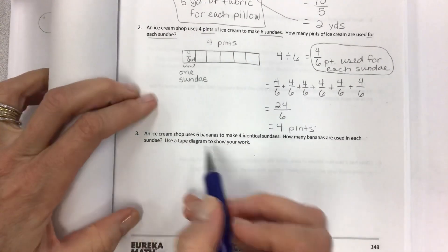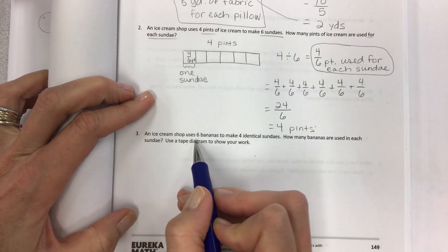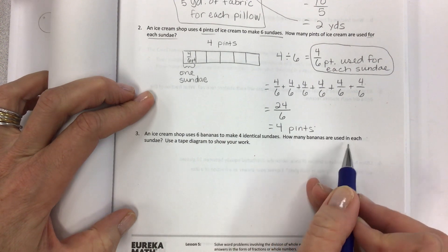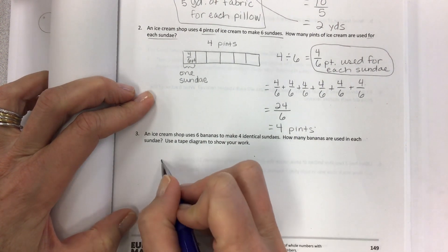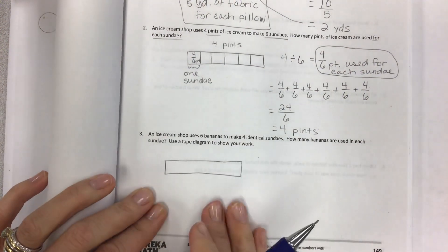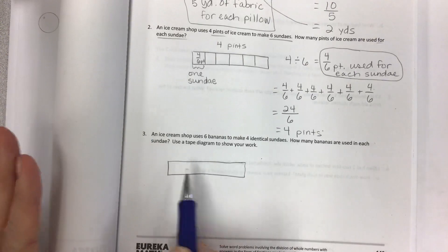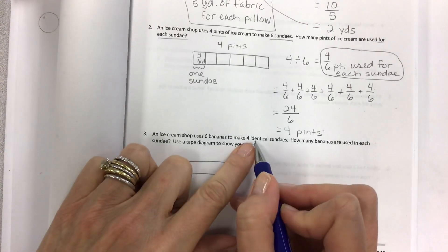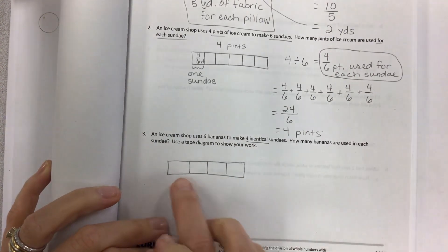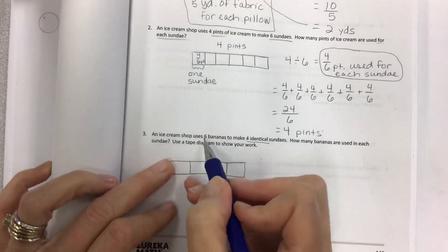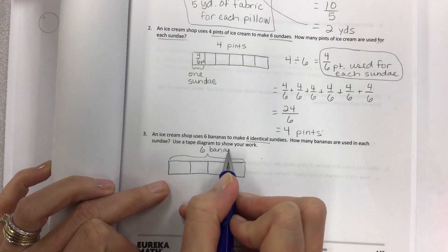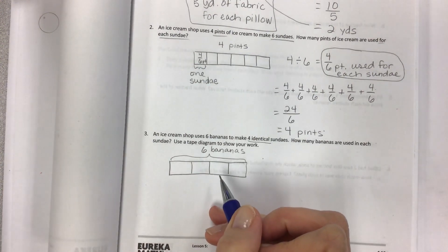More ice cream. They must know it's snack time. An ice cream shop uses six bananas to make four identical sundaes. How many bananas are used in each sundae? Use a tape diagram. So what do you put on top? Is it the sundaes? Is it the bananas? How are you going to know? They're telling me these are the identical things. This is what's being repeated, the sundaes. So what's my total? Six bananas.